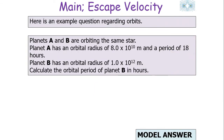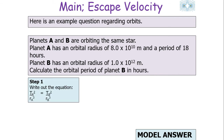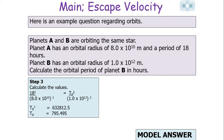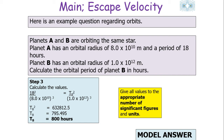Example question: Planet A and Planet B are orbiting the same star. Planet A has an orbital radius of 8.0 × 10¹⁰ m and a time period of 18 hours. Planet B has an orbital radius of 1.0 × 10¹² m. Calculate the orbital period of Planet B in hours. Step one: write out the equation. Step two: place the values in. Because this is a ratio and both time periods are in hours, no unit conversion is needed. Working through gives an answer of 800 hours.